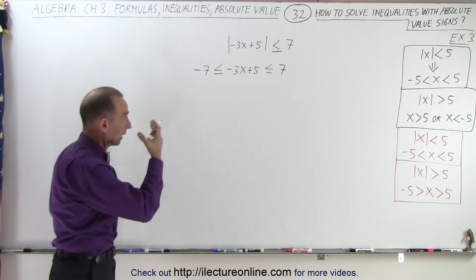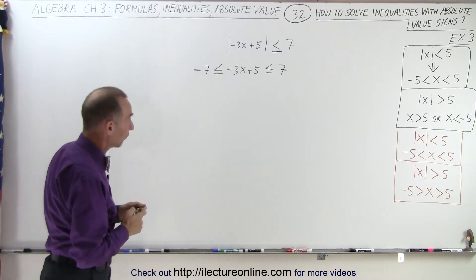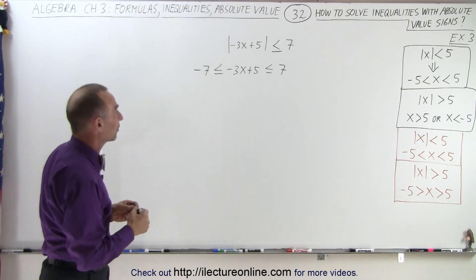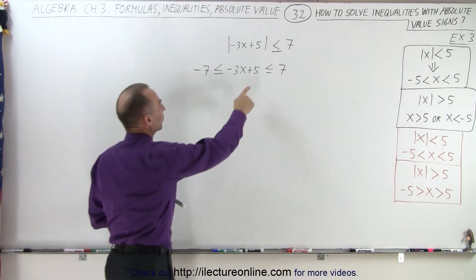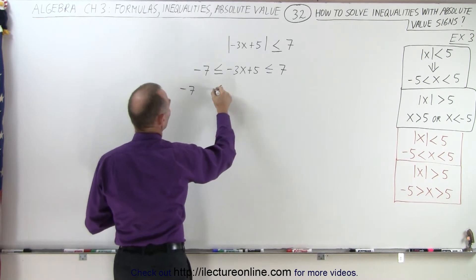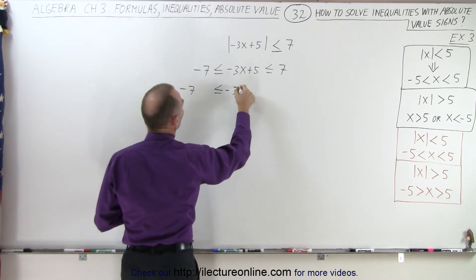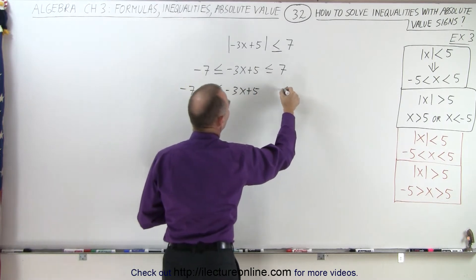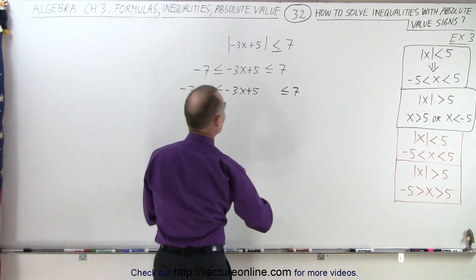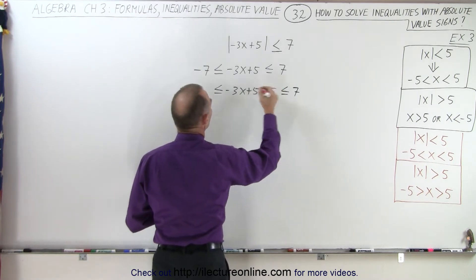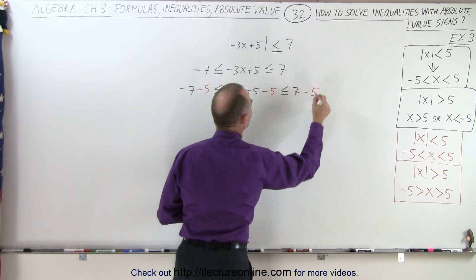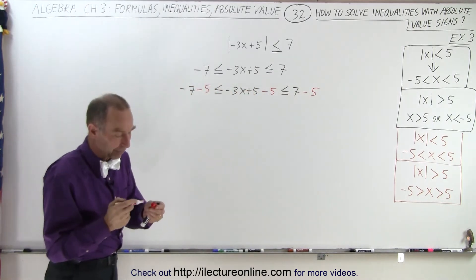And now we need to solve that the way we know how. The first thing we want to do is subtract 5 from all three sections of that inequality to get rid of the plus 5 in the middle. So that ends up being minus 7, minus 3x plus 5, less than or equal to 7. And then we realize that if we subtract 5 from the middle, which we also must do over here and over here, we can get rid of that plus 5 in the middle.